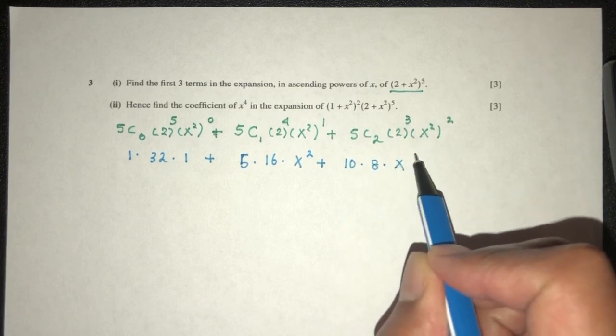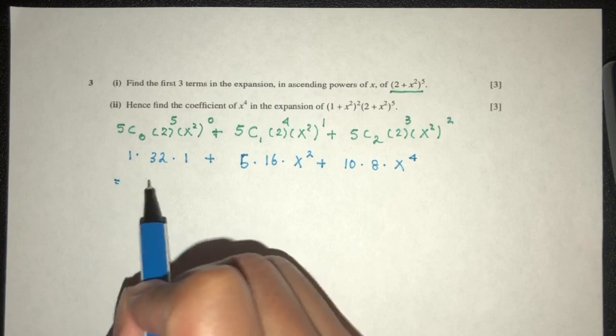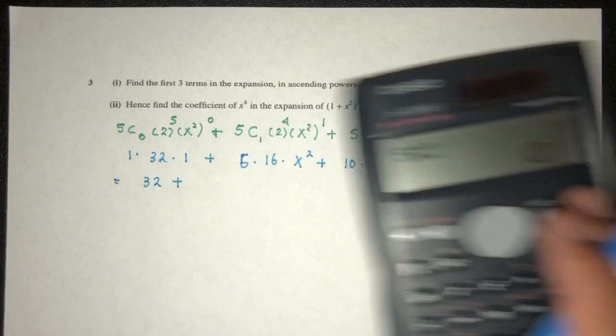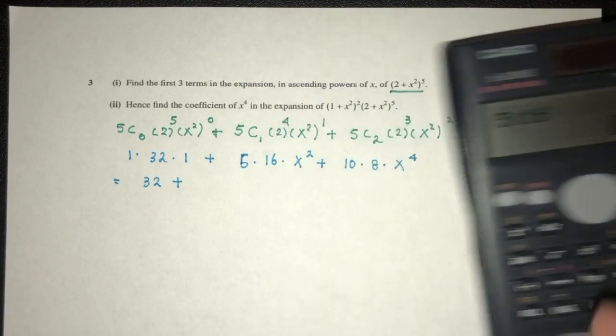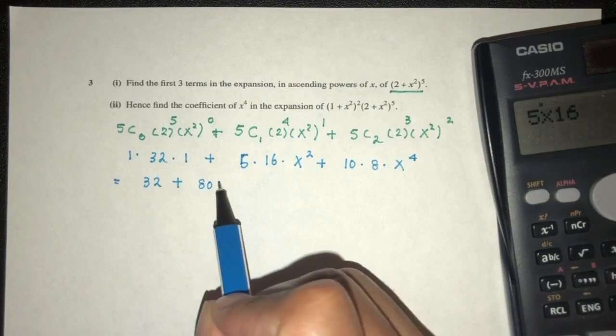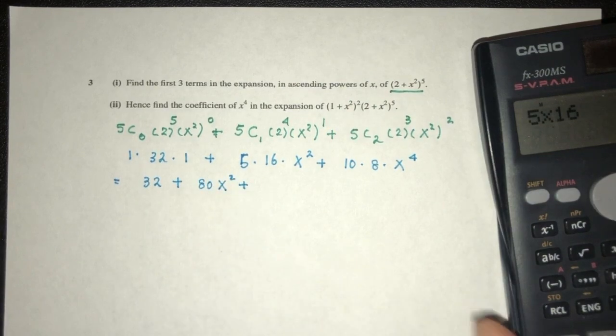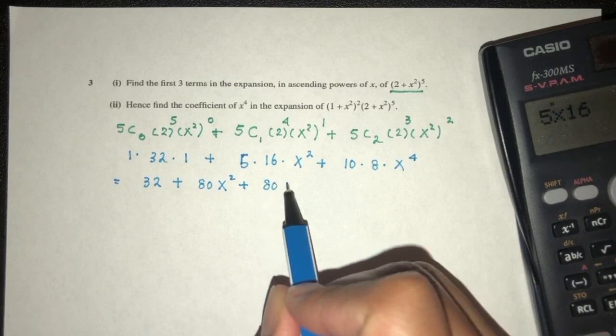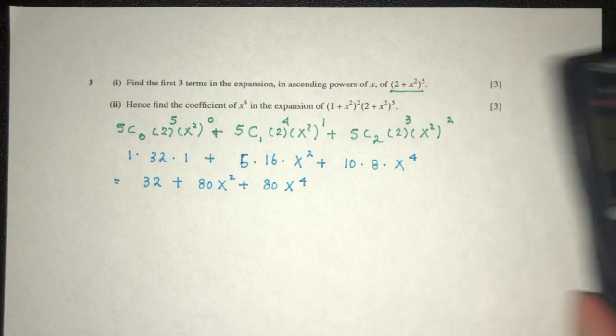So now simplify, there will be 32 plus 5 times 16, that should be 80, plus 80 x power 4. That is part 1 of the question.